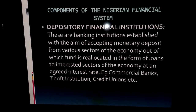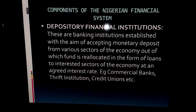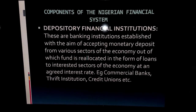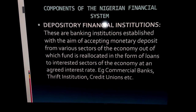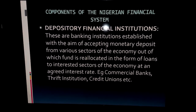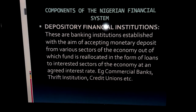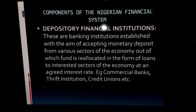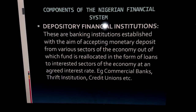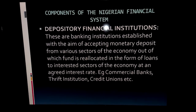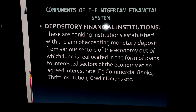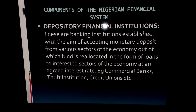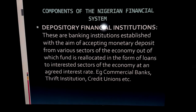Next we have depository financial institutions — institutions established to mobilize deposits. Commercial banks are the primary example; you save money with them. At the local level in Nigeria we also have the 'alajos,' who collect money from petty traders and return it at month's end. Credit unions operate similarly. These are all part of Nigeria's financial system.